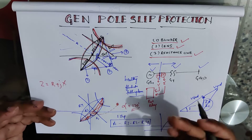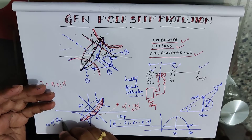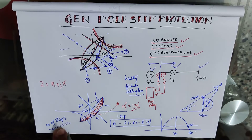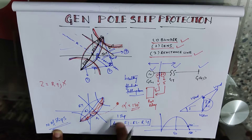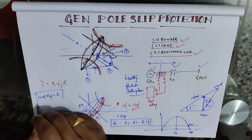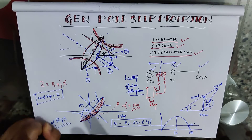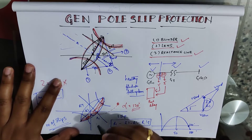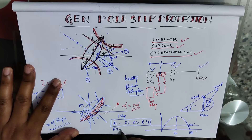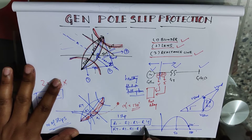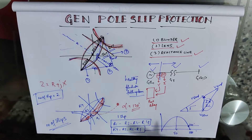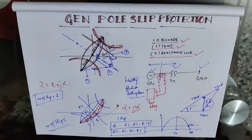Inside the relay there are settings for the number of slips. If the slips counted by the relay become equal to the setting, then only will it issue a trip command. For example, if we set the number of slips equal to 2, the relay will detect two slips — one traversal from R1 to R2 to R3 to R4, and another in reverse from R4 to R3 to R2 to R1 — and then issue a trip command. This is the logic behind the protection relay.